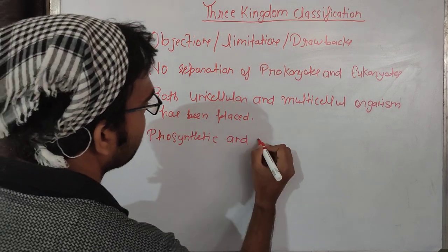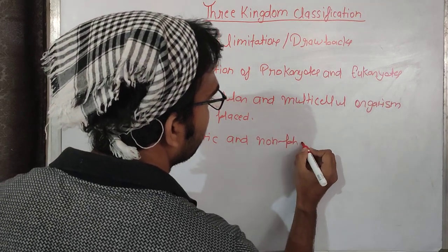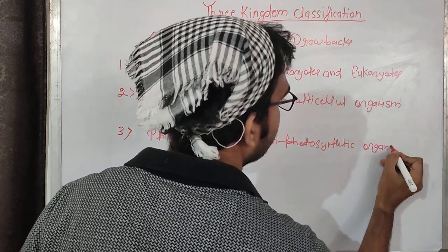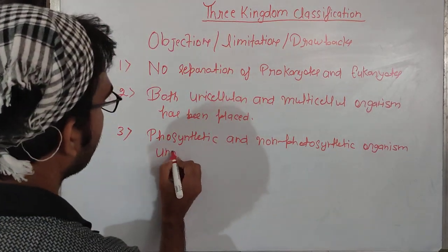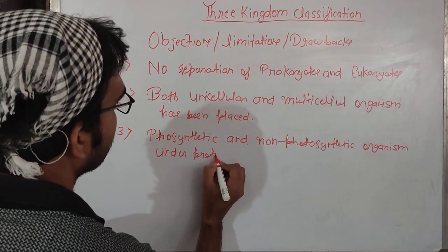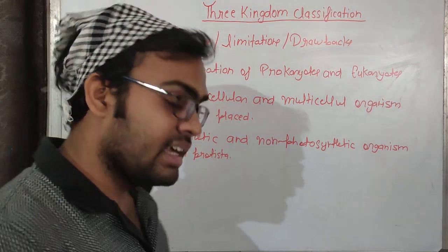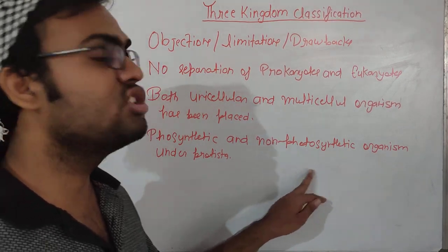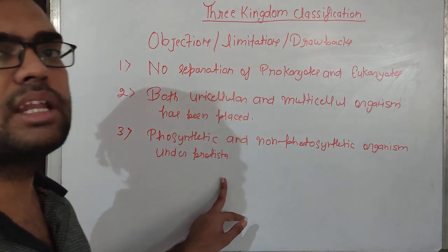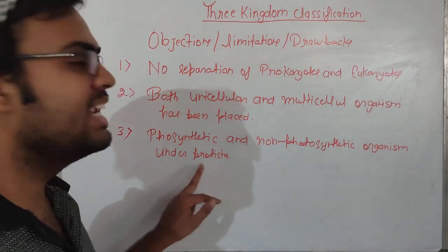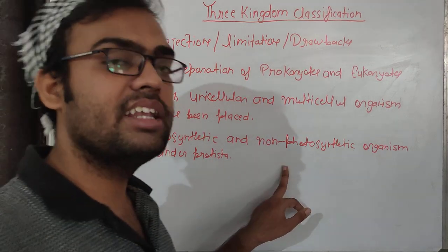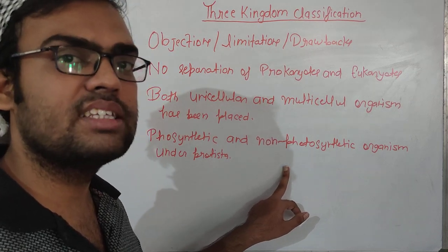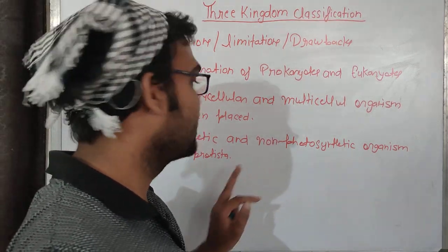The third drawback is that in the same kingdom Protista, he kept all photosynthetic organisms as well as non-photosynthetic organisms. Organisms which have the capacity to produce their own food and organisms which don't have the capacity to produce food through photosynthesis were both placed under Protista.